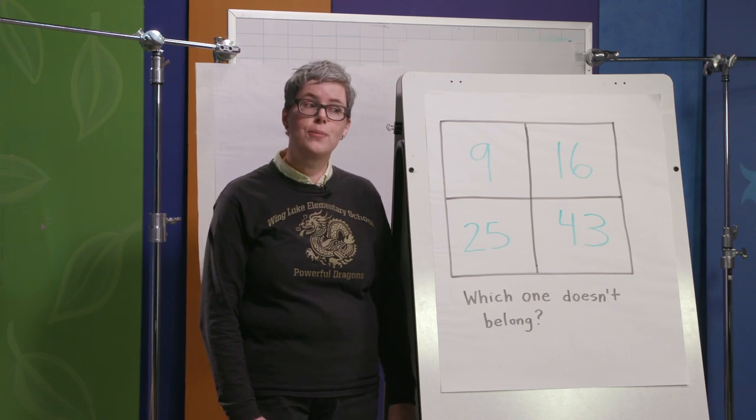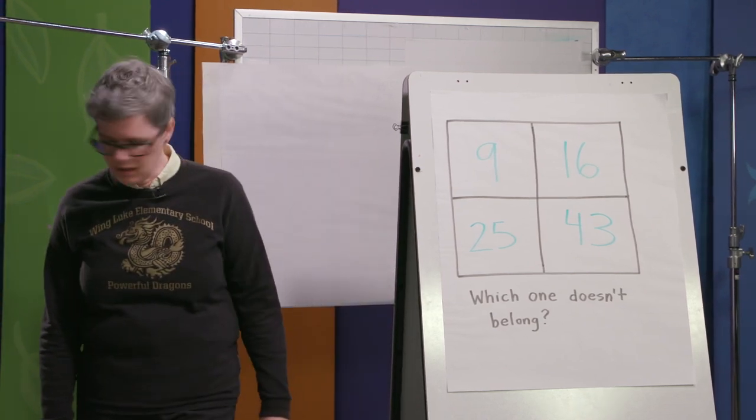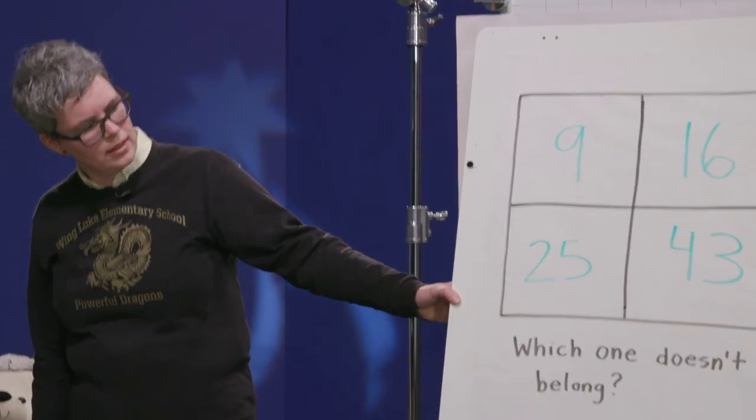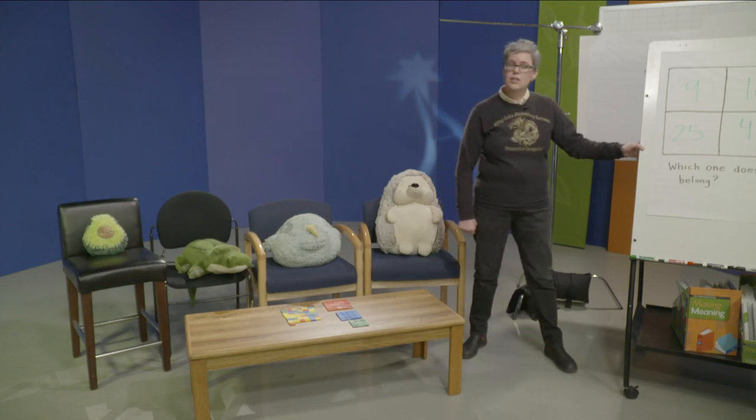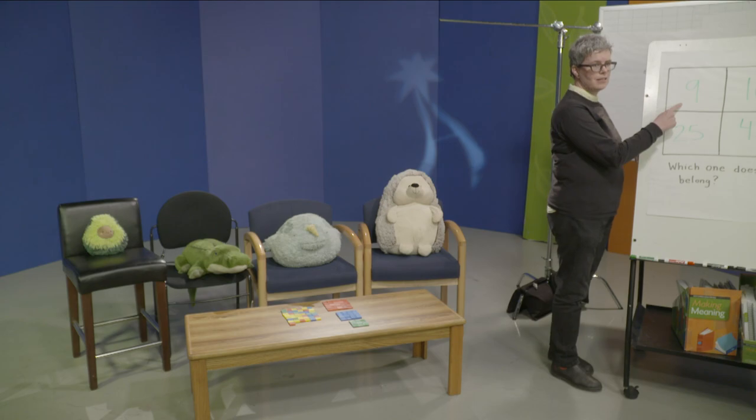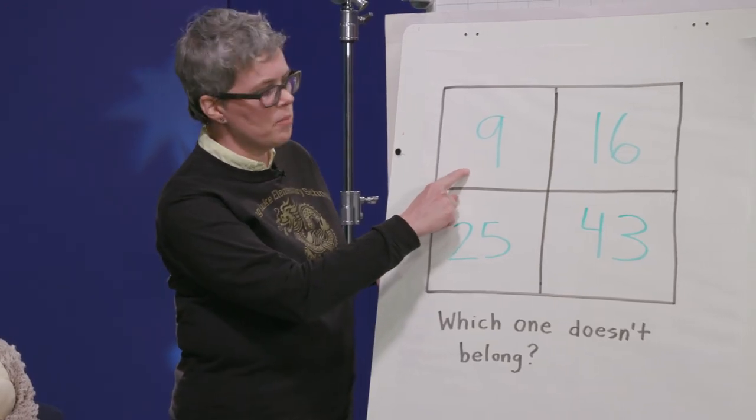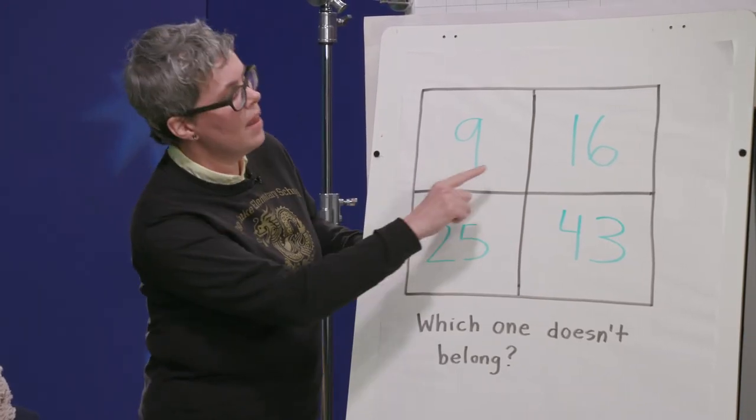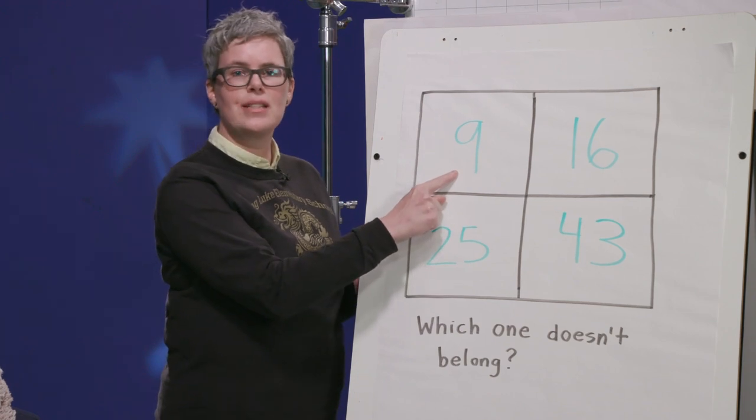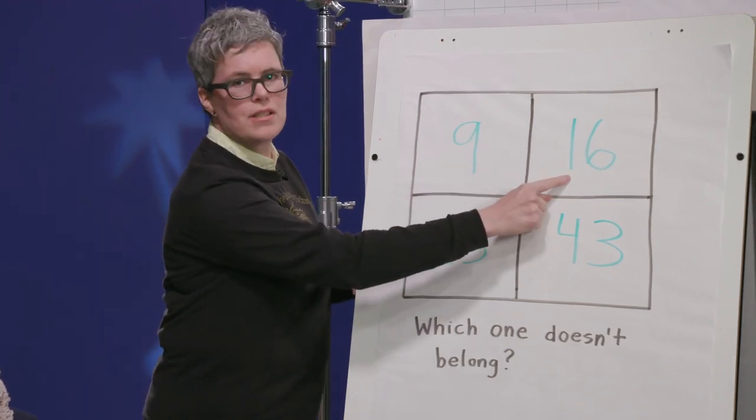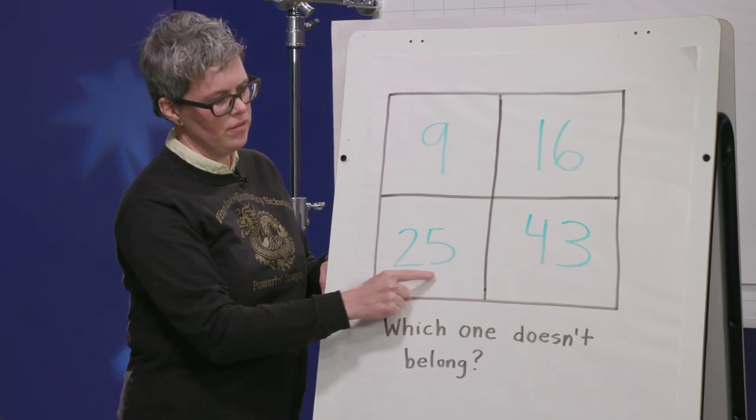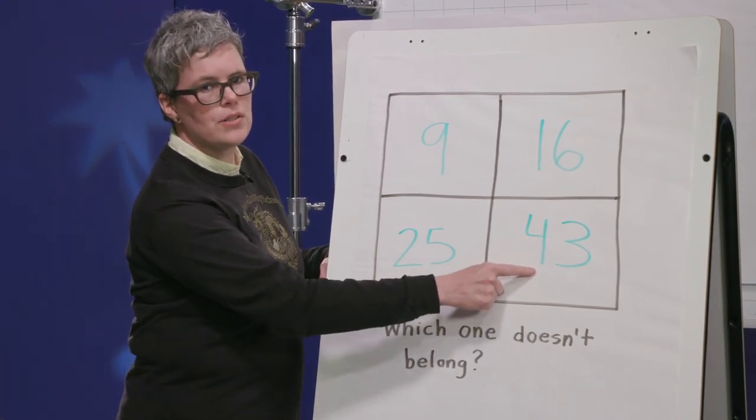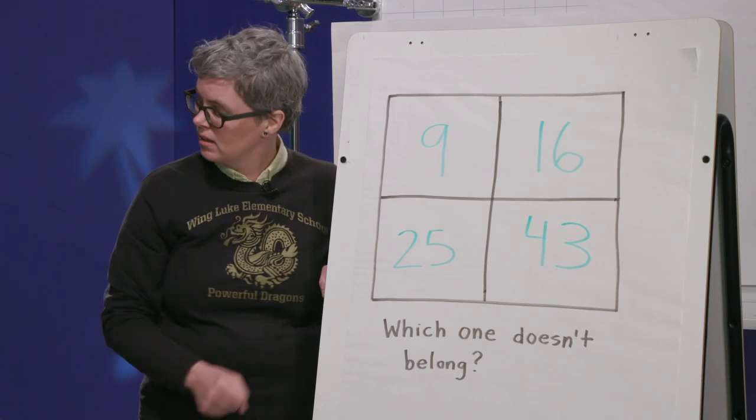Alright, Chicken Soup can't wait any longer. Chicken Soup, what do you think? Which one doesn't belong? Oh, Chicken Soup says nine doesn't belong. Nine doesn't belong because nine is a single digit number. 16 has two digits, one and six. 25 has two digits, two and five. 43 has two digits, four and three. Thank you Chicken Soup.